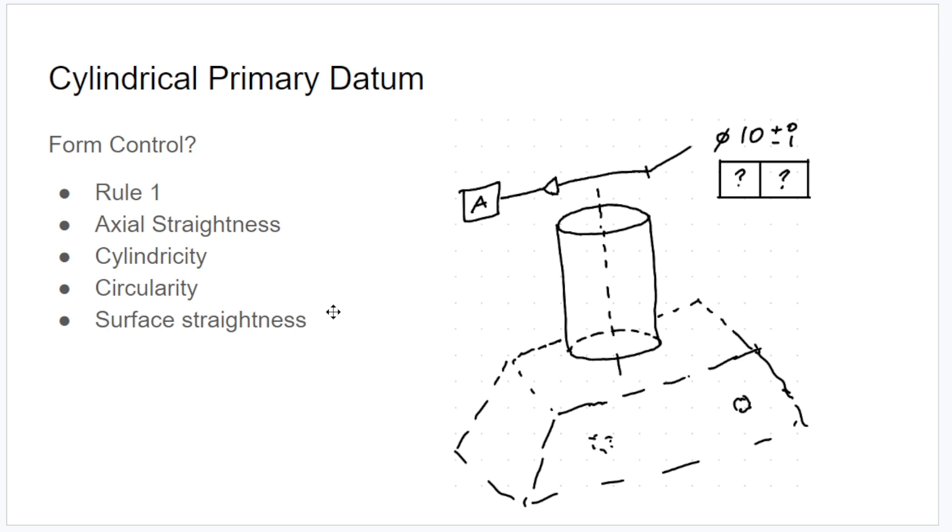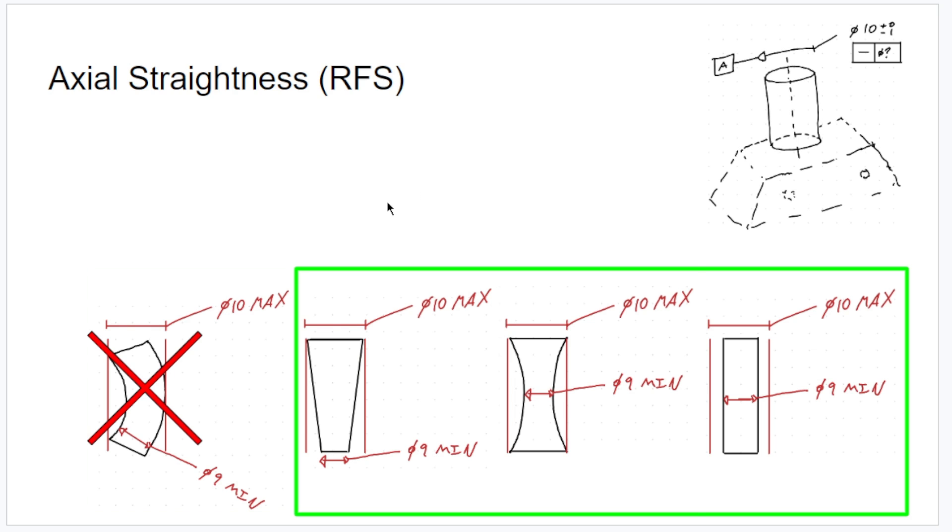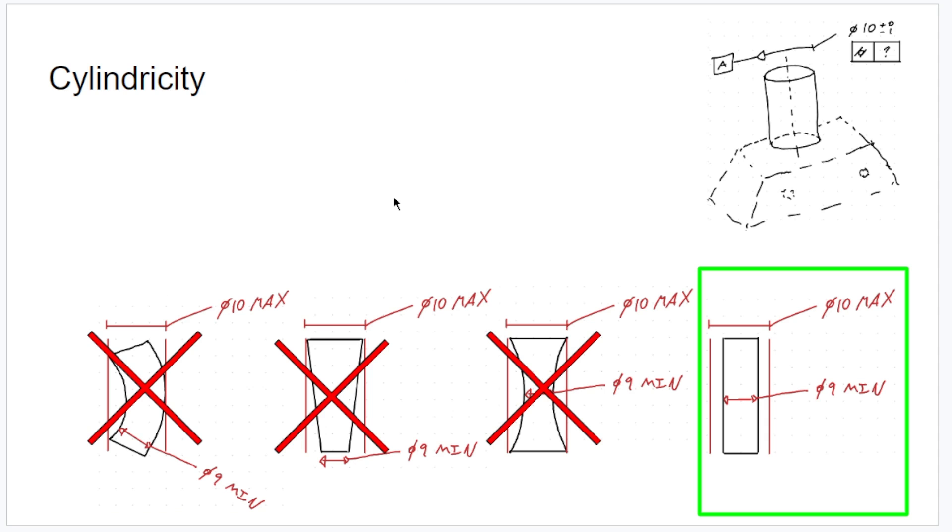A couple of other ways that I won't be going over today, but you could control it with circularity and surface straightness. I've never used either of these to control a cylinder as a primary datum, but it's certainly an option for you. Now having gone over all three of these options with you, which one is right for you? And of course it's hard to say without actually sitting down looking at the part and the way that it functions, but let's start with the most restrictive first, cylindricity.